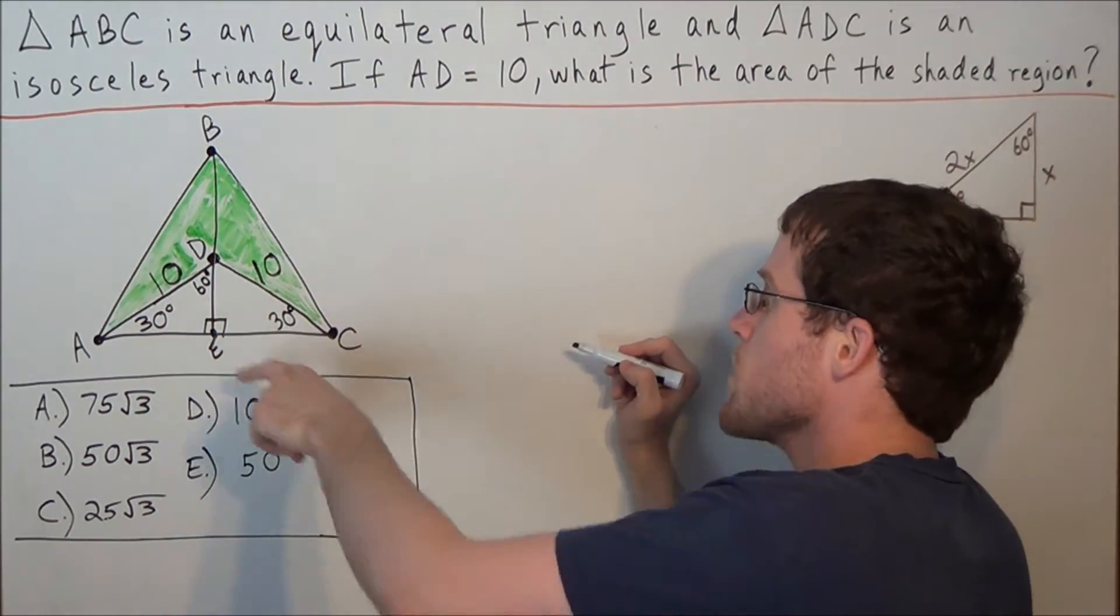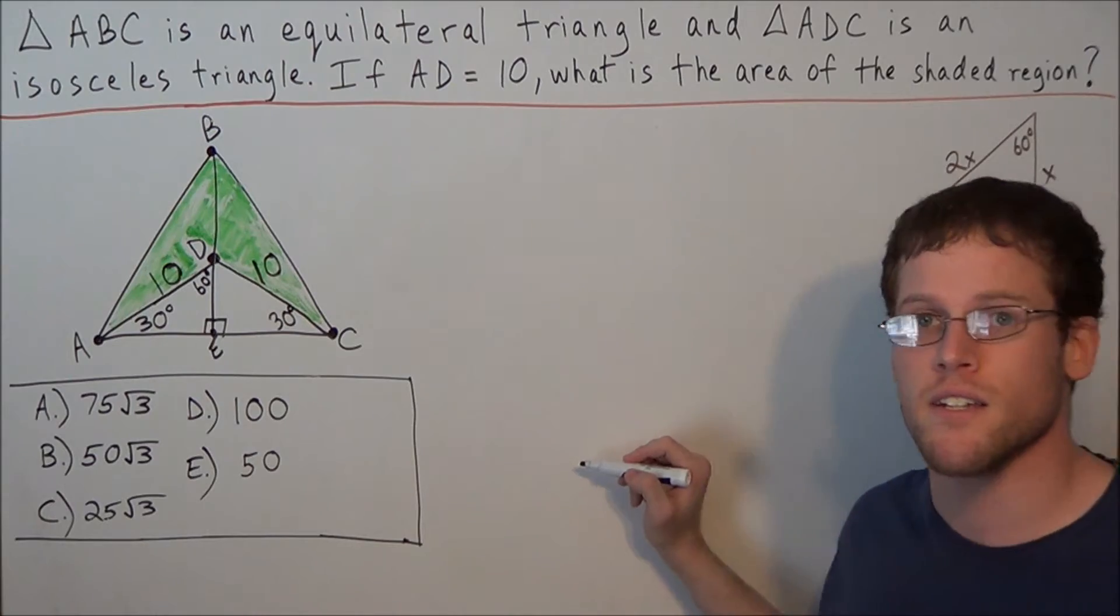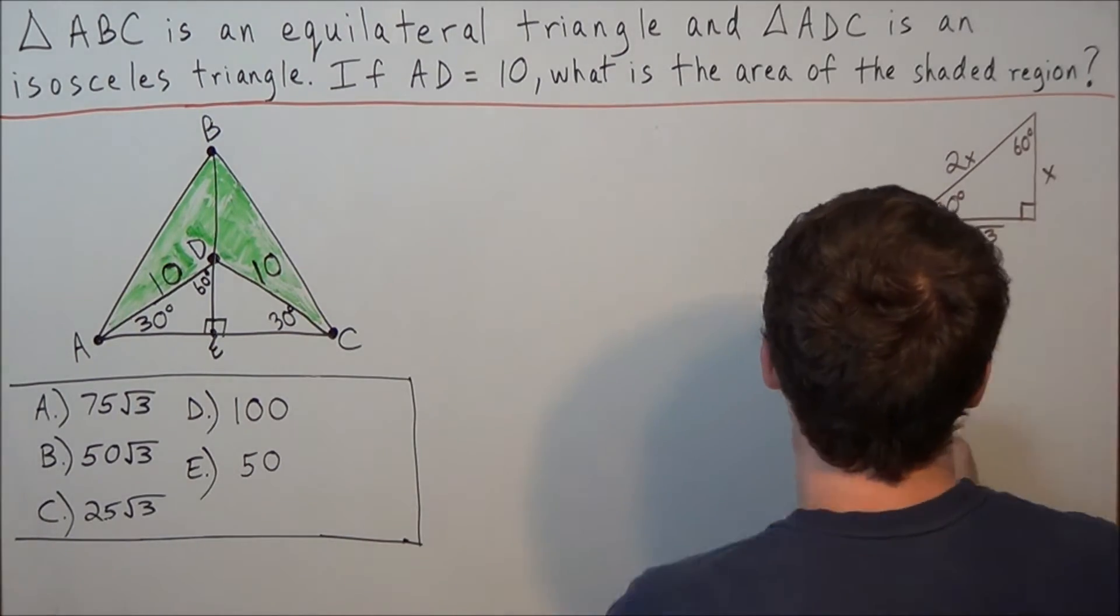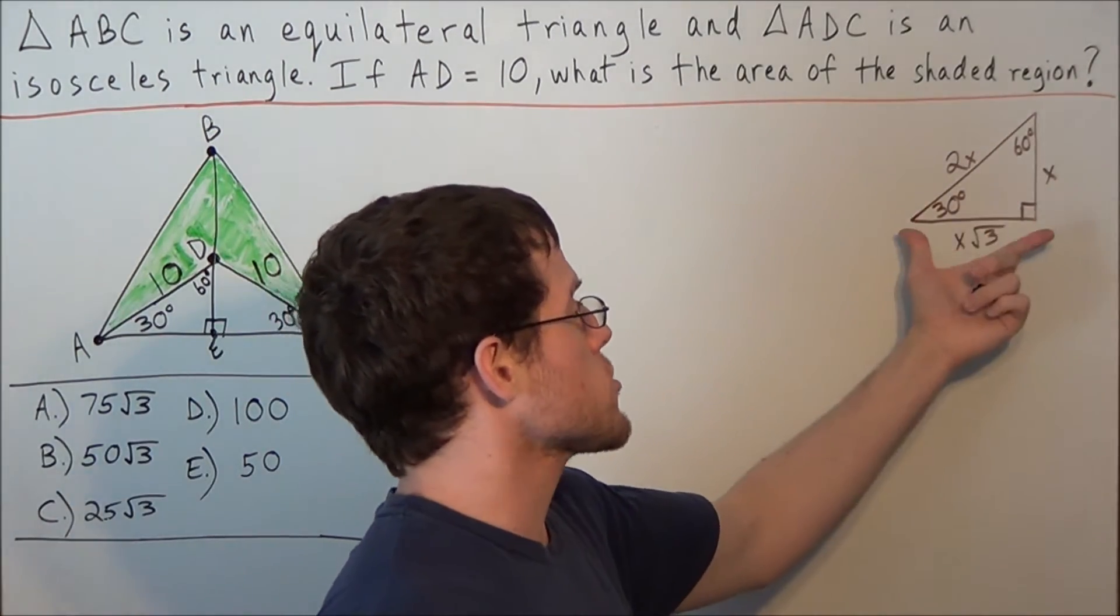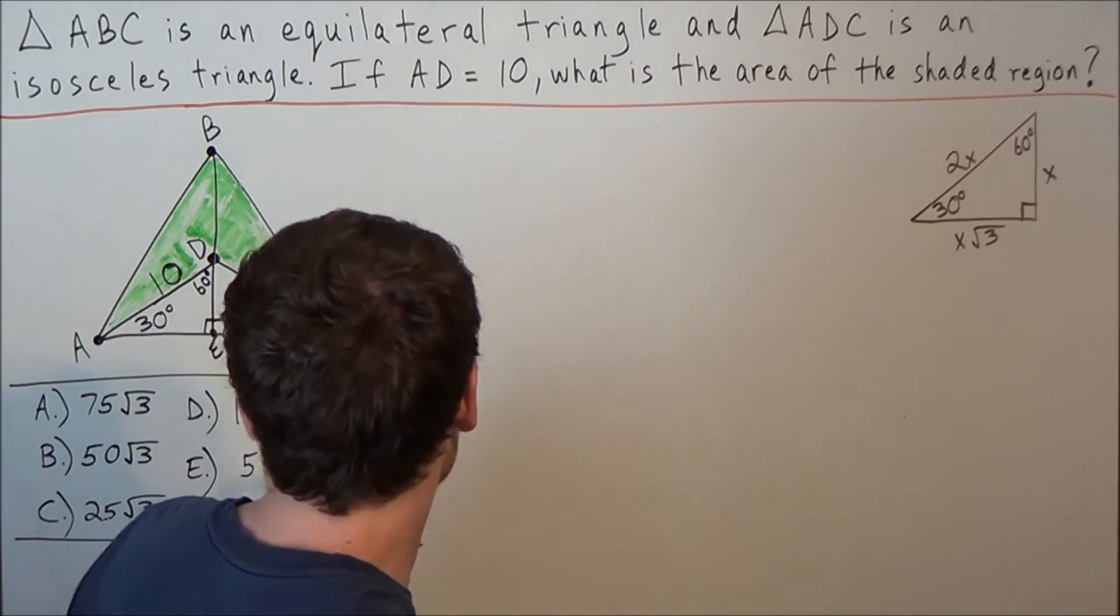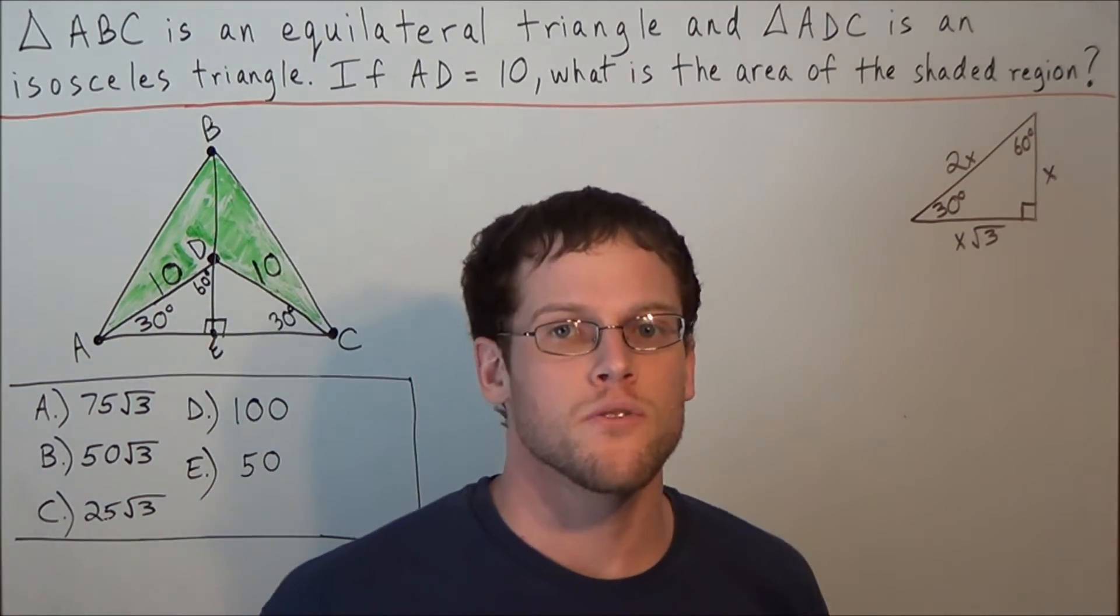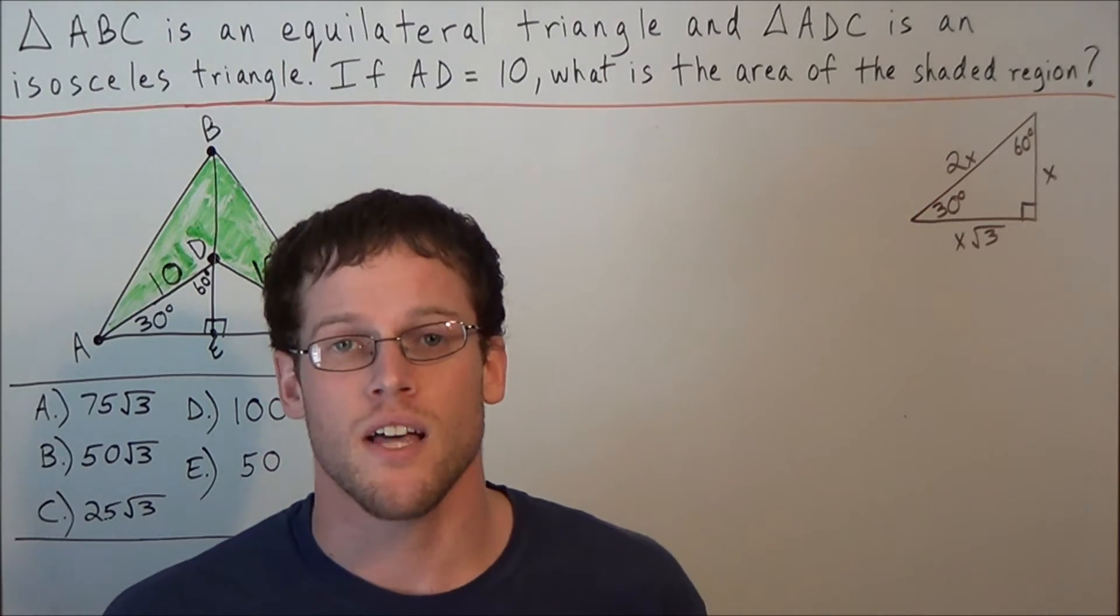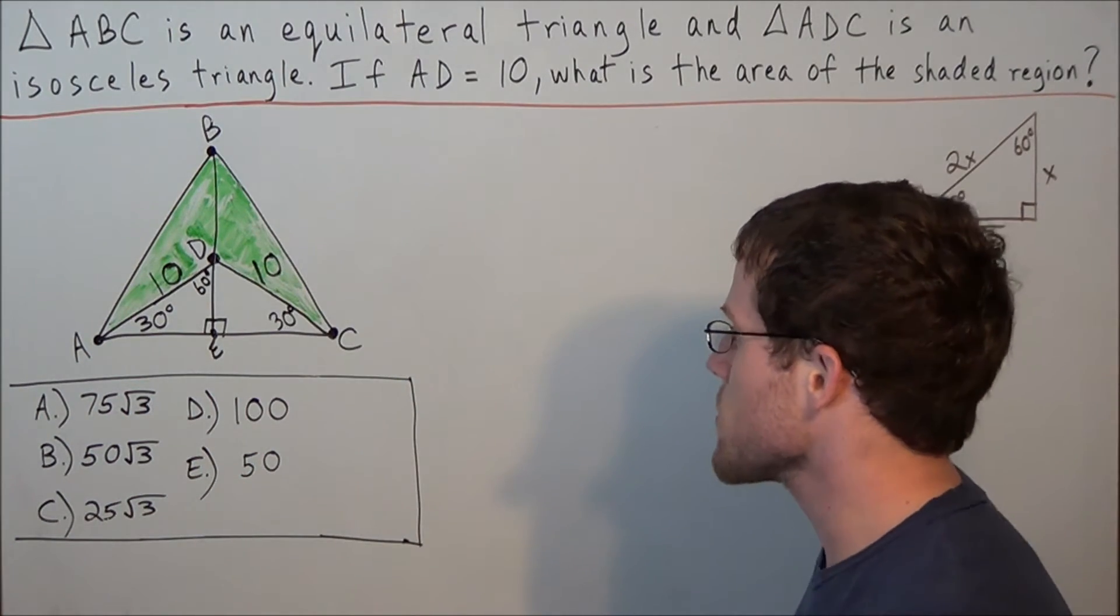We'll just label one of them, but now we know that we have a 30, 60, 90 triangle. So if we go to the reference sheet, we can make use of the triangle there to find the length of the missing sides. Otherwise, you would have to use the Pythagorean theorem, and it just creates a lot of extra work that you don't need to do.